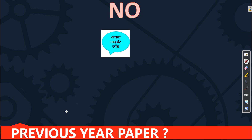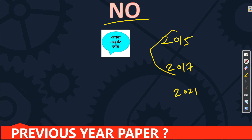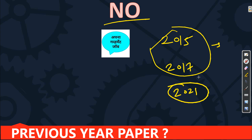You might wonder whether previous papers are available. BDL does not release previous papers officially. Basically, this is the recruitment of 2015, then 2017, and now 2021. They have done recruitment only twice, but all the memory-based questions we have. Based on that and the current trend, we will try to determine what the paper level of the 2021 exam will be.